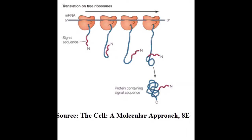Proteins can be translocated into the endoplasmic reticulum either during their synthesis on membrane-bound ribosomes, called co-translational translocation, or after their translation has been completed on free ribosomes in the cytosol, called post-translational translocation.